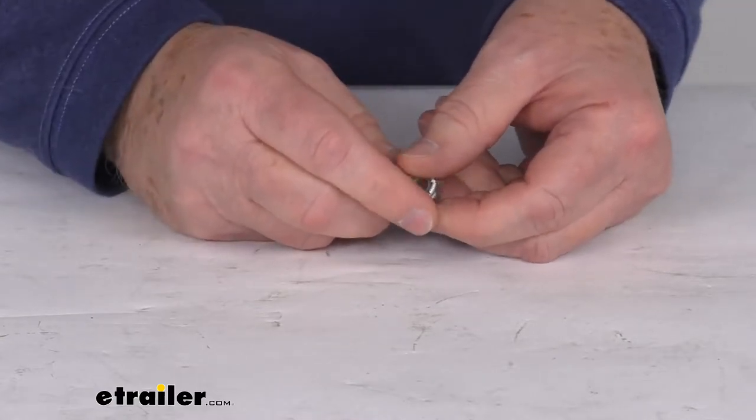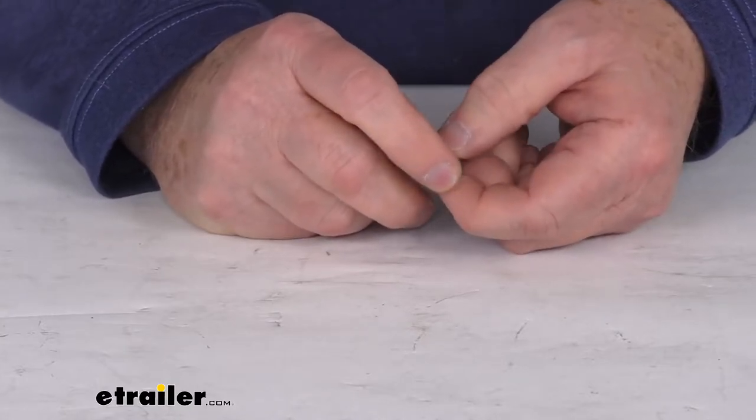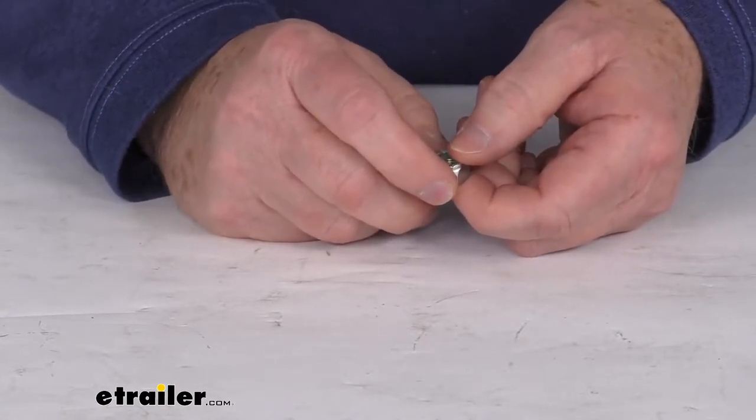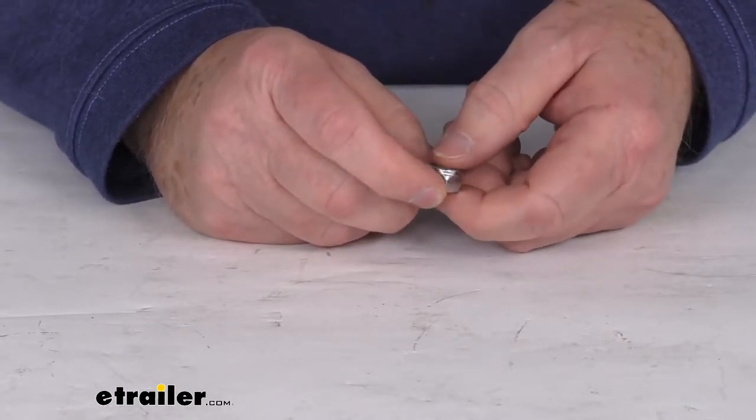Now this 5 sixteenths diameter lock nut is designed for use with a spring retainer bolt on your slipper springs. Now that's the spring retainer bolt we do sell separately on our website and it's listed on this product page as a related product.